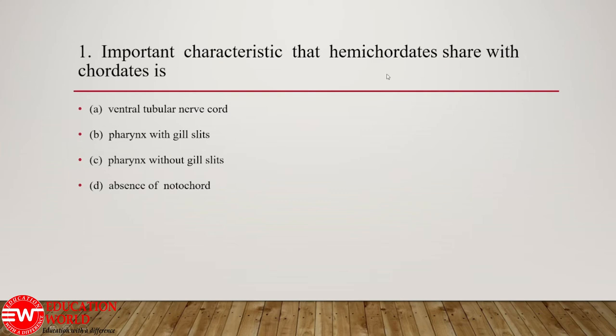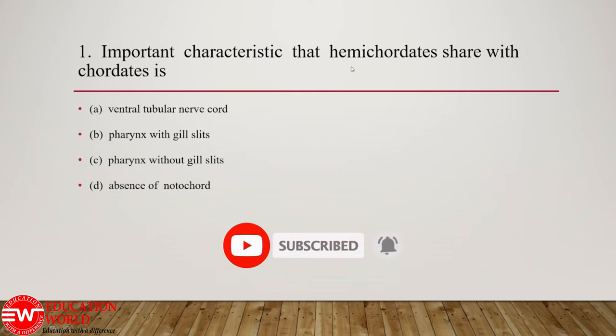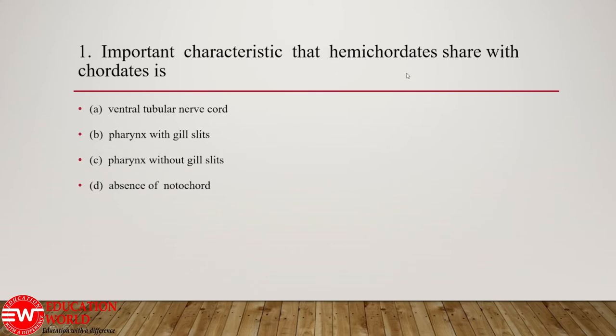If we see the Kingdom Animalia classification, the hemichordates constitute an intermediate category between non-chordates as well as chordates. When the hemichordates were discovered, they were added among the chordate group because it was assumed that they have the notochord. But later on, it was reported that the structure considered the notochord is actually a hard structure present in the anterior part of the body, called the stomochord.